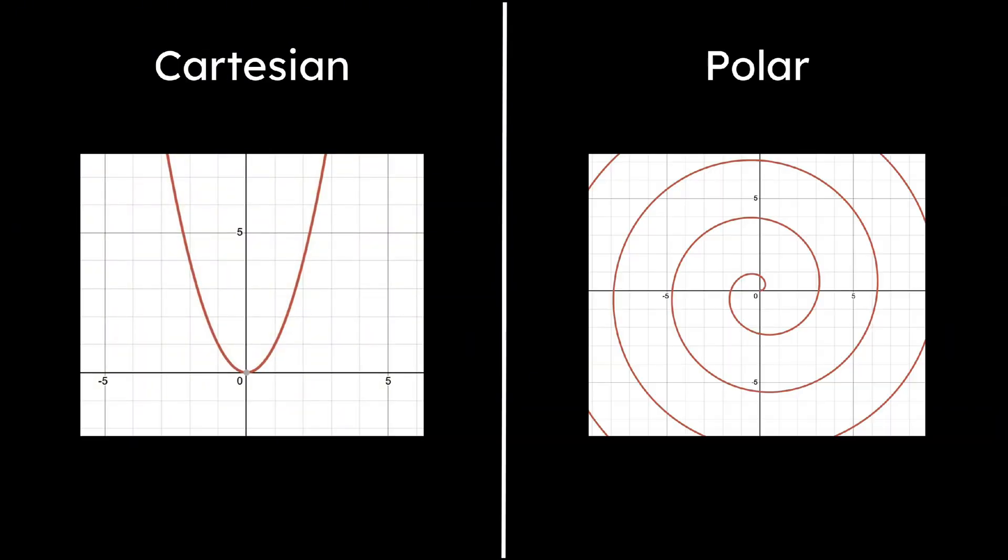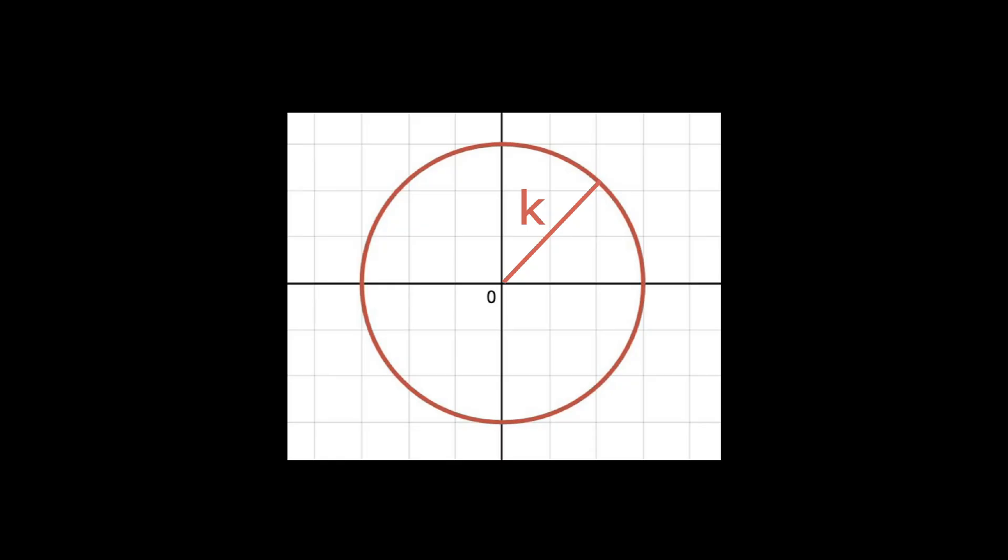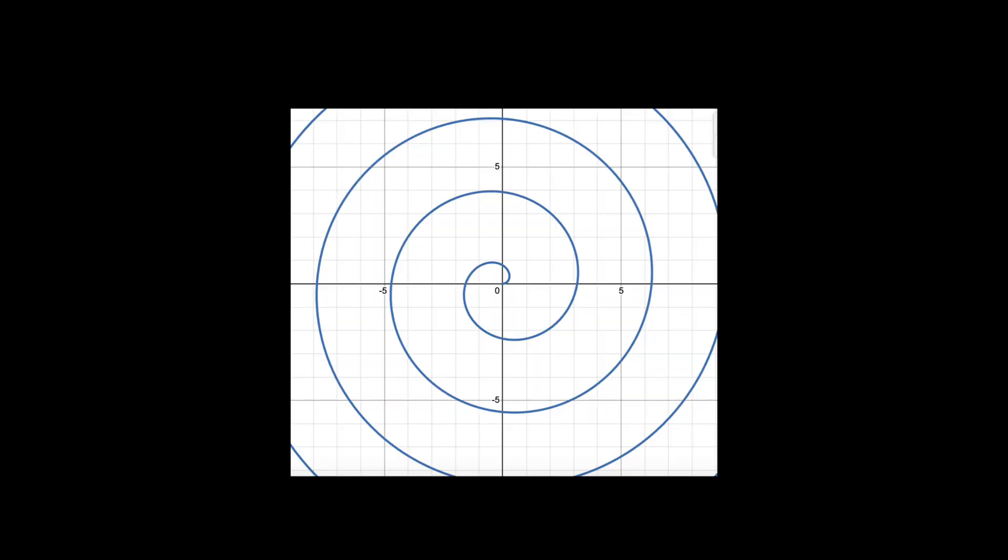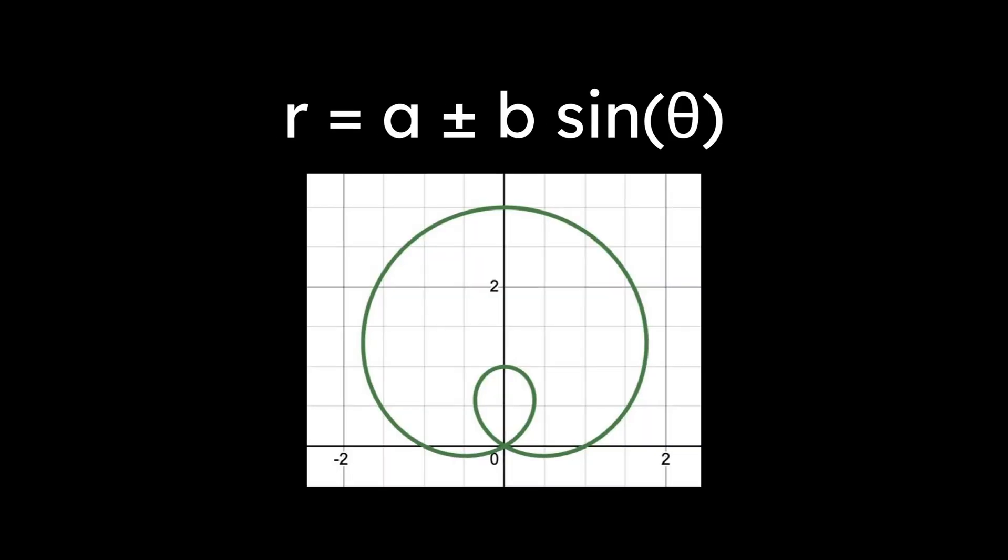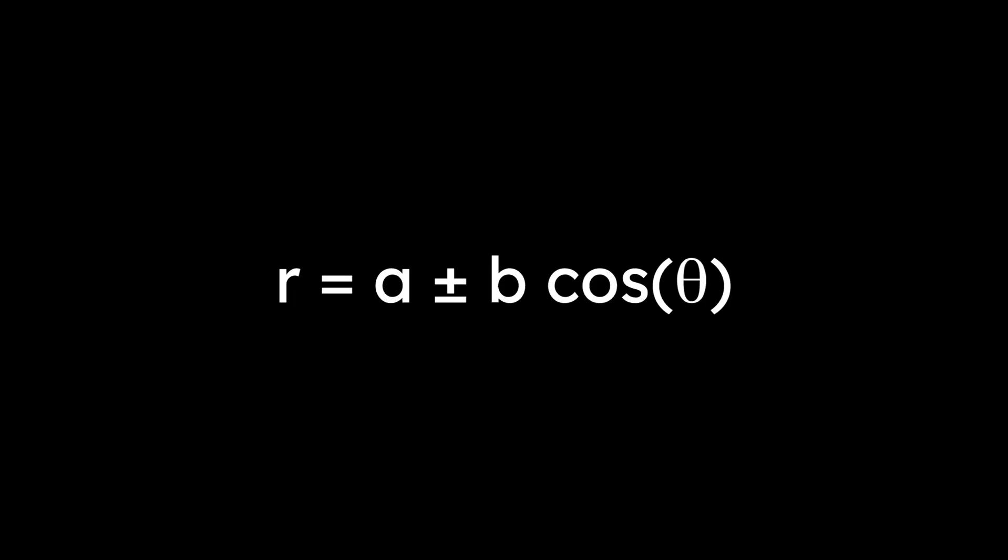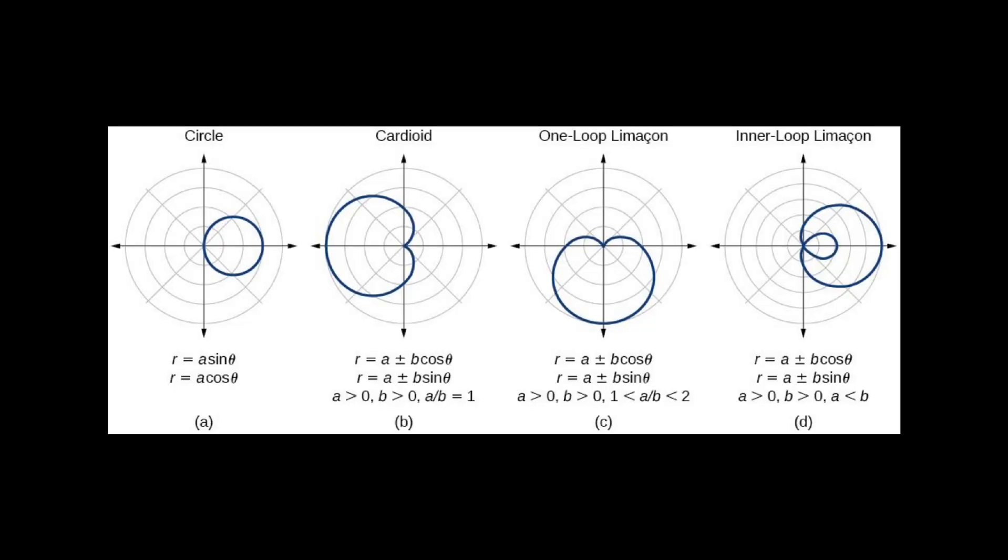Just like there are equations in Cartesian coordinates, there are in polar. Here are the most important ones. r equals the number k makes a circle of radius k. r equals a theta gives you an Archimedean spiral, which spirals outwards as theta increases. Limacons have the form r equals a plus or minus b cosine of theta, or r equals a plus or minus b sine of theta. There are specific types of limacons based on the values of a and b listed here.